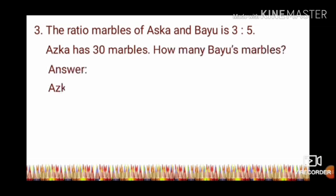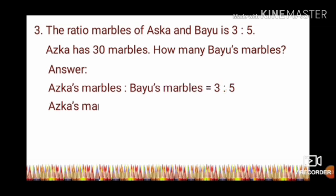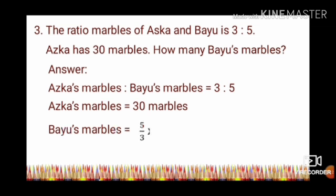Answer: The ratio of Aska's marbles to Bayu's marbles is 3/5. Aska's marbles is 30. Bayu's marbles equals 5/3 times 30. 30 divided by 3 equals 10. The result is 50 marbles.